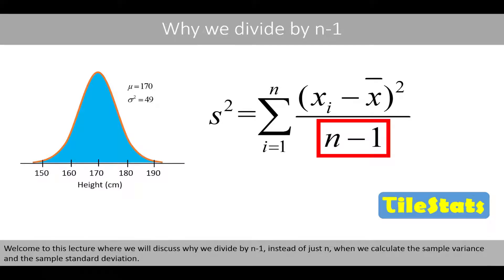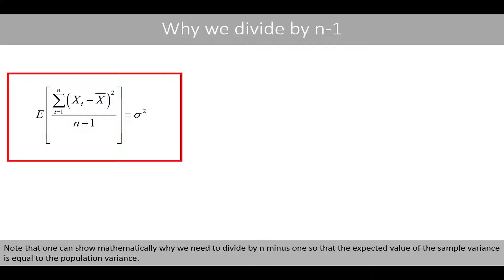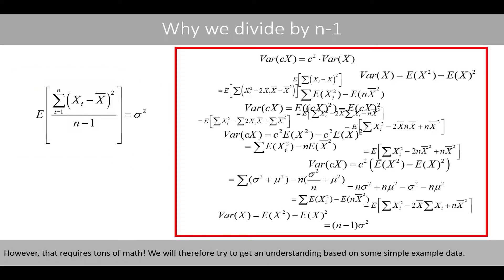Welcome to this lecture where we'll discuss why we divide by n minus 1 instead of just n when we calculate the sample variance and the sample standard deviation. Note that one can show mathematically why we need to divide by n minus 1 so that the expected value of the sample variance is equal to the population variance. However, that requires tons of math. We'll therefore try to get an understanding based on some simple example data.